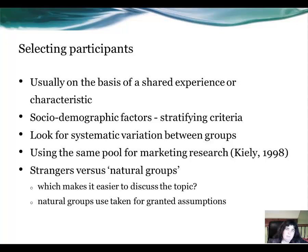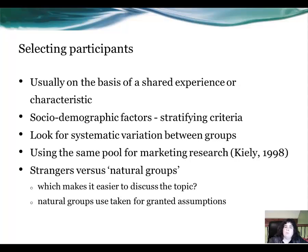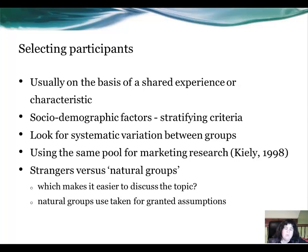Selecting participants: there is a variety of means of selecting participants. Maybe your research itself dictates the participants that you want, such as socio-demographic factors — people from an ethnic group, an ethnic origin, or a gender. It could be based on their shared experiences or characteristics. Or it could be what is known as stranger versus natural groups. Natural groups are those already formed, like a mother and toddler group or a book club, whereas strangers are where you pick people at random and nobody knows each other. You need to question which makes it easier to discuss the topic at hand, and natural groups are used for taking-for-granted assumptions.